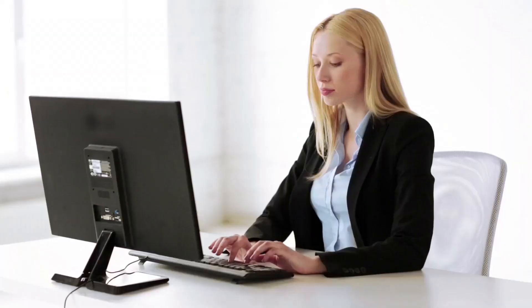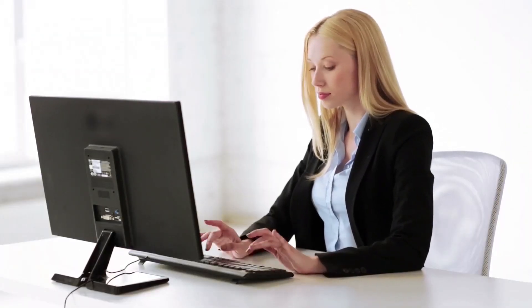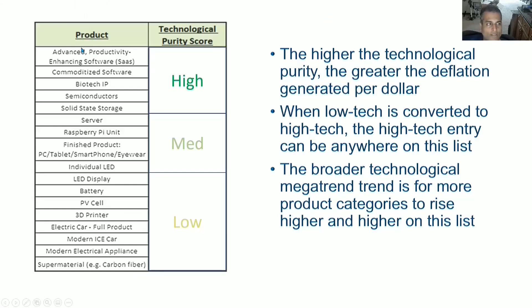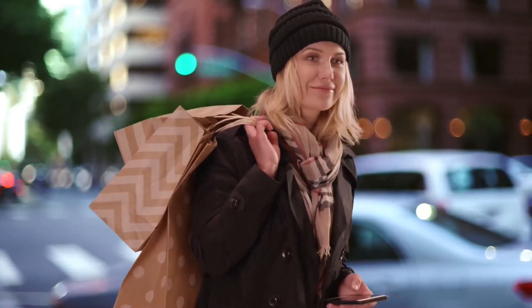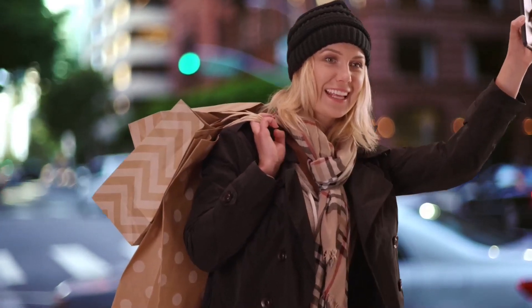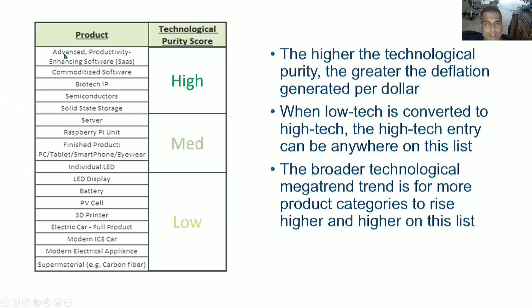Software is completely dematerialized. Dematerialization is inherent to being high tech because you don't have to worry about inventory, materials, and shipping, and it can diffuse to the greatest number of people the fastest. Advanced productivity-enhancing software on a software-as-a-service delivery model is pretty much the highest tech type of thing. When low tech is converted to high tech — such as an incandescent bulb going to an LED bulb, or taxis being replaced by ride-sharing services like Uber and Lyft — it could enter anywhere on this list, including the middle.